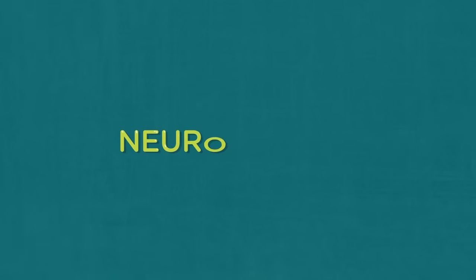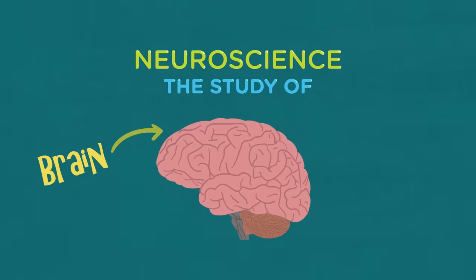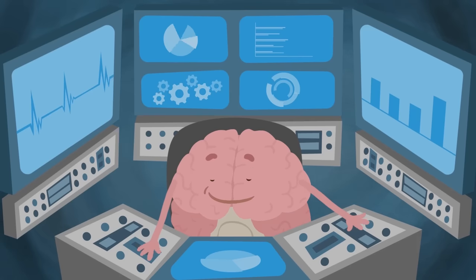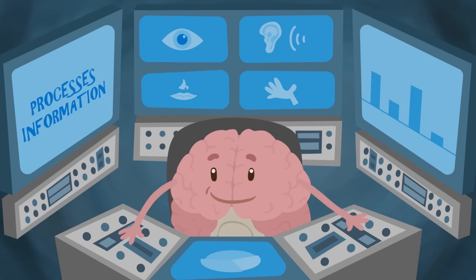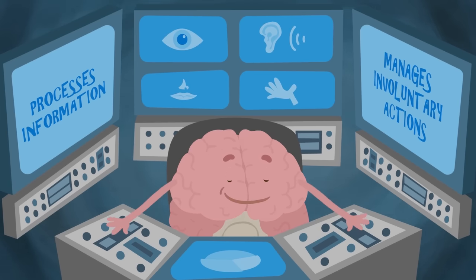We'll have to learn a little bit about neuroscience, the study of the brain and nervous system. The brain is your body's control center. It processes information to and from your senses and manages vital and voluntary actions like breathing.